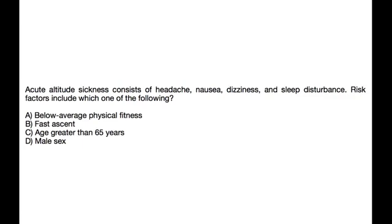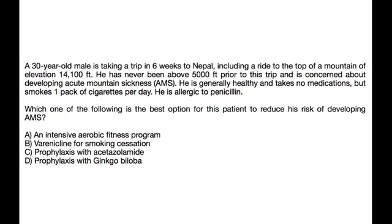Vignette one: Acute altitude sickness consists of headache, nausea, dizziness, and sleep disturbance. Risk factors include which of the following — below average physical fitness, fast ascent, age greater than 65, or male sex? Since one way to prevent altitude illness is slow ascent, a risk factor would be fast ascent.